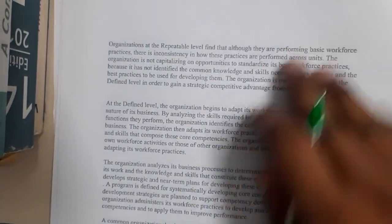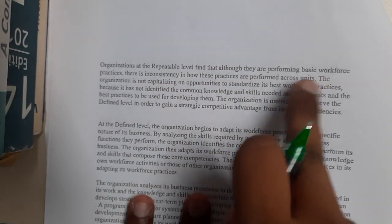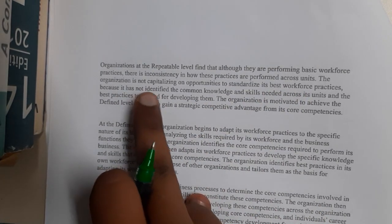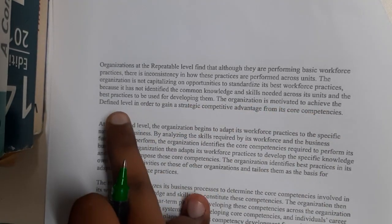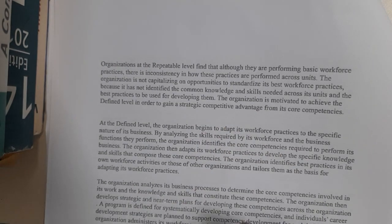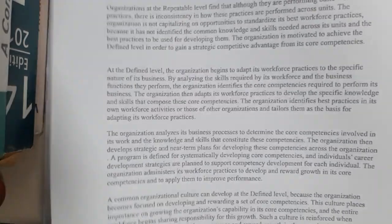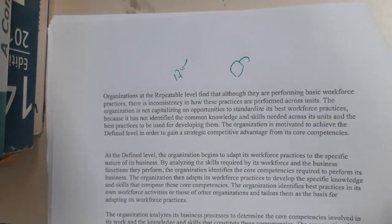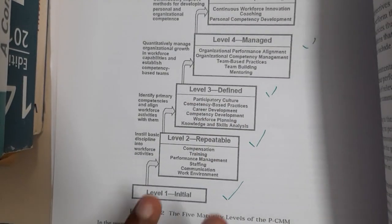Organizations at the Repeatable level find that, although they are performing basic workforce practices, there is inconsistency in how these practices are performed across units. The organization is not capitalizing on opportunities to standardize its best workforce practices because it has not identified the common knowledge and skills needed across units. In Repeatable they follow some strategies to teach employees but aren't mature enough to define structured rules, whereas in Defined they follow particular, requirement-based plans.